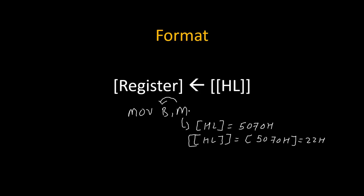So this 22H will get transferred inside B. Always remember: whenever M appears in the instruction, we will replace that M by the content of content of HL. Content of HL is 5070H and the content of content of HL is 22H. So this instruction will move this 22H data inside the given register.